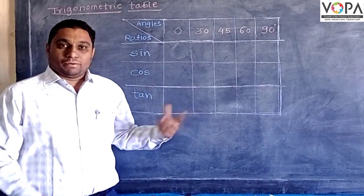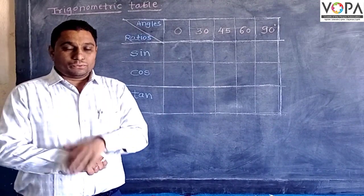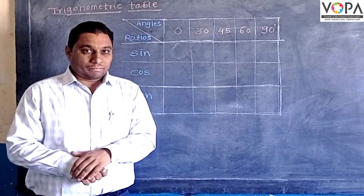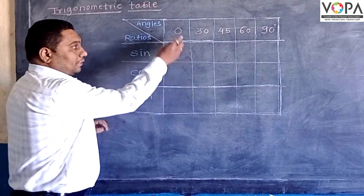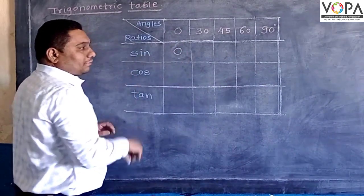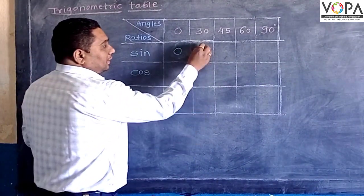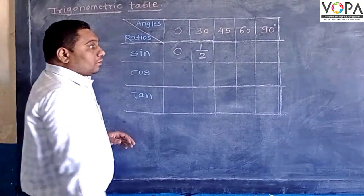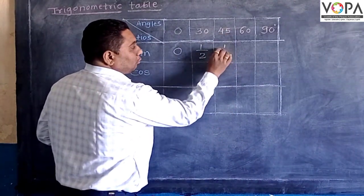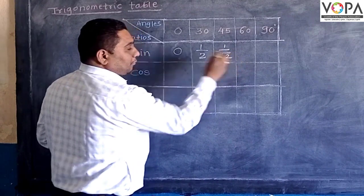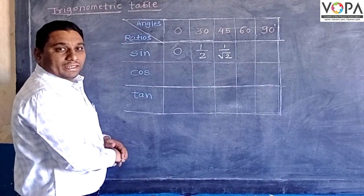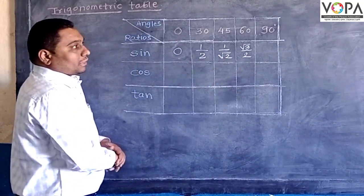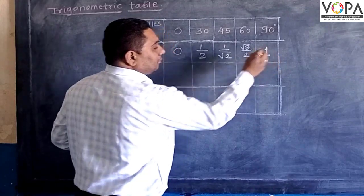Now how can we make a table? Dear students, let us remember only one table, that is our sine table. Sine of 0 degree equals 0. Sine of 30 degree equals one-half. Sine of 45 degree equals 1 over square root of 2. Sine of 60 degree equals square root of 3 over 2. And sine of 90 degree equals 1.